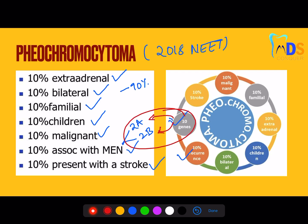Regarding extra-adrenal pheochromocytoma, the most common site of occurrence of the extra-adrenal tumor of this type is the organ of Zuckerkandl. Malignancy is 10% — make note that this is essentially a benign tumor, but malignancy can be seen in 10% of cases.